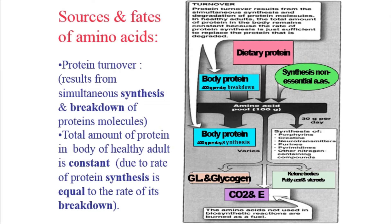An important concept is protein turnover. The source of protein in our body is dietary protein, and protein turnover is defined as the total of both synthesis and breakdown of protein molecules. Whatever remains in balance between them is protein turnover, and the total amount of protein in a healthy adult is generally constant.